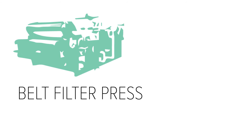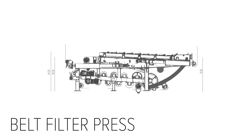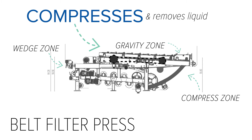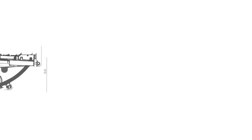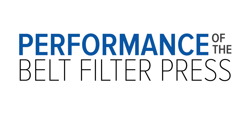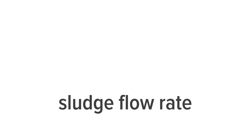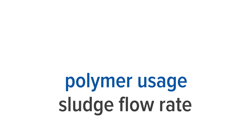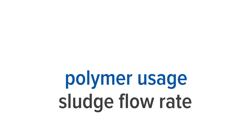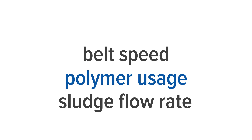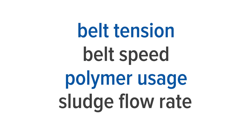The Belt Filter Press uses pressure to remove the liquid. The performance of the Belt Filter Press is affected by the sludge feed rate, the polymer usage, belt speed, and the belt tension.